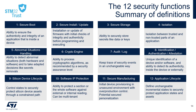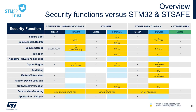This slide I won't comment — later on, you can refer to it and take the time you need to review the summary definitions of those 12 security functions, which is basically the summary of what I have just said. What is much more important and more interesting is to look at this table where you will find the mapping of these 12 security functions across our STM32 and STSafe products portfolio, with highlights of the features supported by the silicon or by the firmware and the link to our reference solutions.